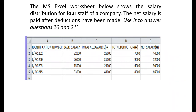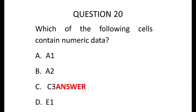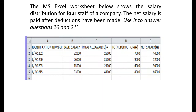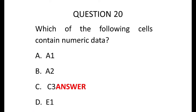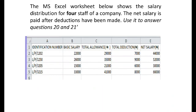Next we are shown a worksheet and we have to use this worksheet to answer questions 20 and 21. We are going to use this worksheet to answer the next two questions. Question 20 asks: which of the following cells contain numeric data? The options are A1, A2, C3. C3 is the correct answer. Now let's look at A1.